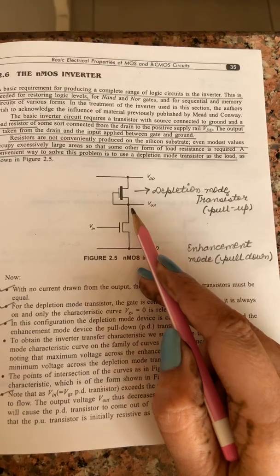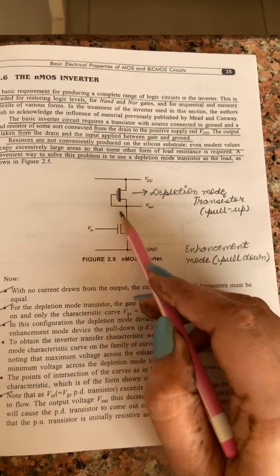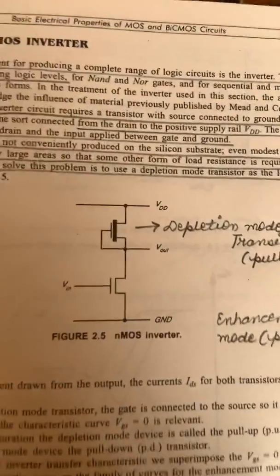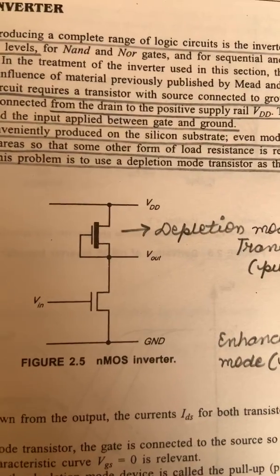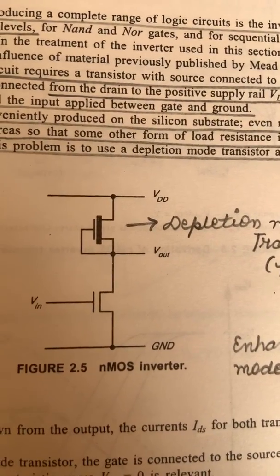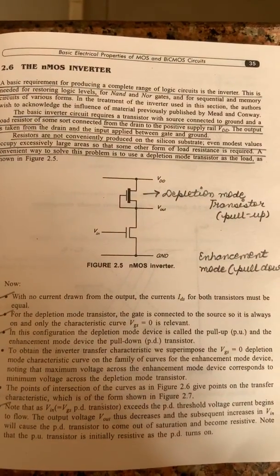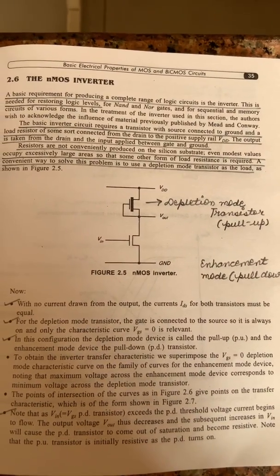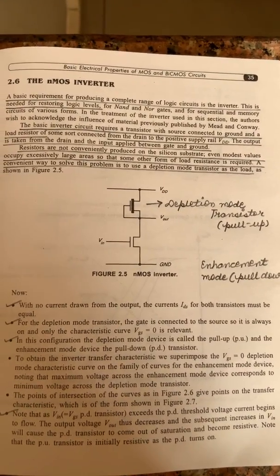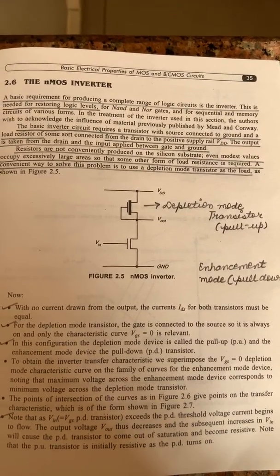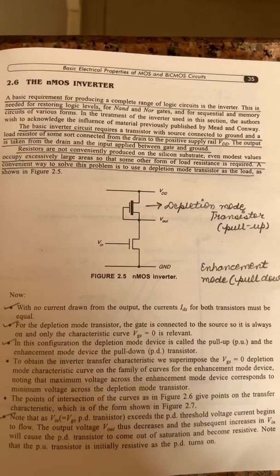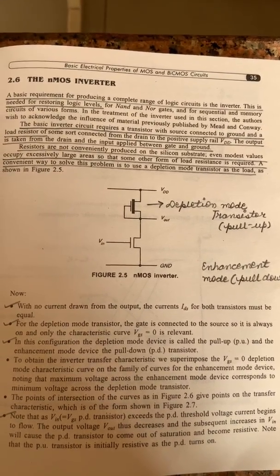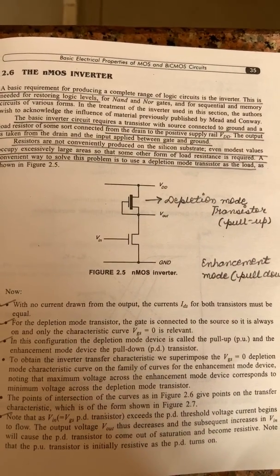Resistors are not conveniently produced on the silicon substrate — even modest values occupy excessively large areas, so some other form of load resistance is required. A convenient way to solve this problem is to use the depletion mode transistor as a load. According to this circuit of the NMOS inverter, we are using a depletion mode transistor as a load. With no current drawn from the output, the drain-to-source current IDS for both transistors must be the same. For the depletion mode transistor, the gate is connected to the source, so it is always on. In this configuration, the depletion mode transistor is called the pull-up transistor and the enhancement mode device is called the pull-down transistor.